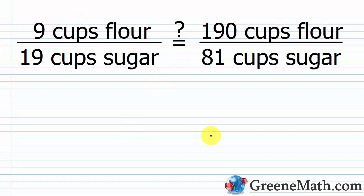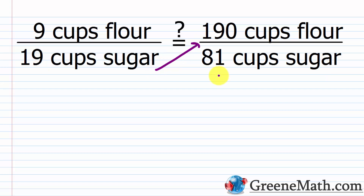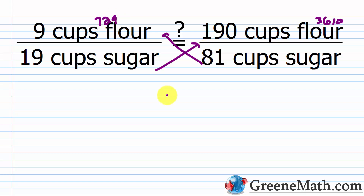What about this one? We have 9 cups of flour to 19 cups of sugar — is this equal to 190 cups of flour to 81 cups of sugar? Check units: cups of flour in both numerators, cups of sugar in both denominators. Cross multiply: 19 times 190 is 3,610, and 81 times 9 is 729. Those amounts are not equal, so no, this is not a proportion.